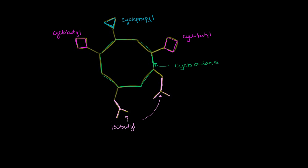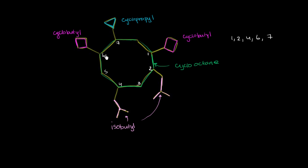We want the numbering that gives us the total lowest set of locants. One option: start at the right cyclobutyl, make this carbon one, and go clockwise — two, three, four, five, six, seven. In this case, groups are attached at positions one, two, four, six, and seven.